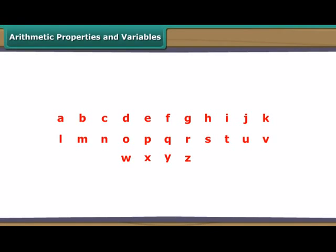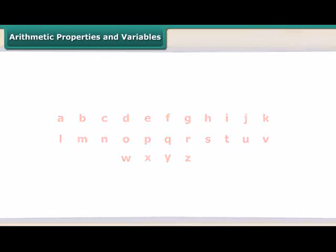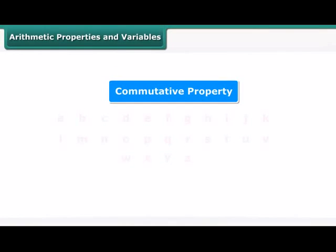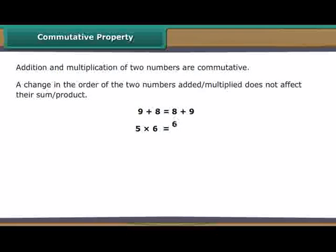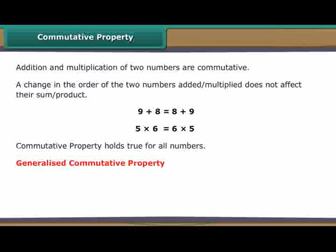Arithmetic properties and variables. Let us now express some commonly used arithmetic properties with the help of variables. The commutative property: Addition and multiplication of two numbers are commutative. In other words, a change in the order of the two numbers added or multiplied does not affect their sum or product. 9 plus 8 is the same as 8 plus 9. 5 into 6 is the same as 6 into 5. The commutative property holds true for all numbers. We can therefore generalize it with variables as A plus B is equal to B plus A. A into B is equal to B into A.